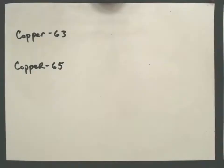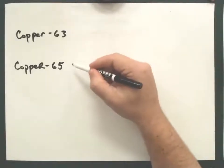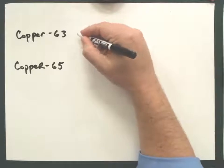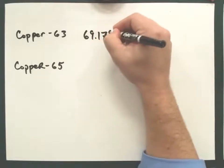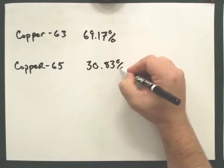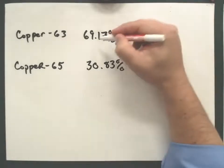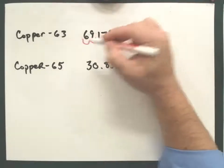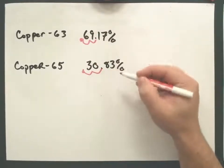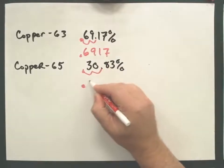Now let's work out the copper example. We have copper-63 at 69.17% and copper-65 at 30.83%. The first step is to change percentages into decimals by moving the decimal two places to the left. So 69.17% becomes 0.6917, and 30.83% becomes 0.3083.